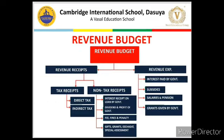How can we further divide revenue budget? Revenue budget has two parts: revenue receipts and revenue expenditure. Revenue receipts can further be classified into two more parts — first, tax receipts, which is the major part, and then non-tax receipts, which is a minor part of revenue receipts of the government.